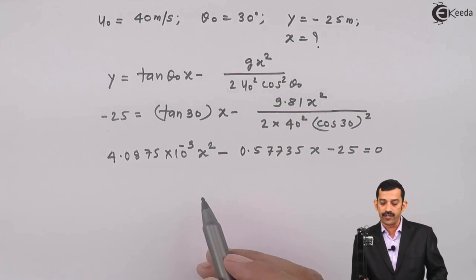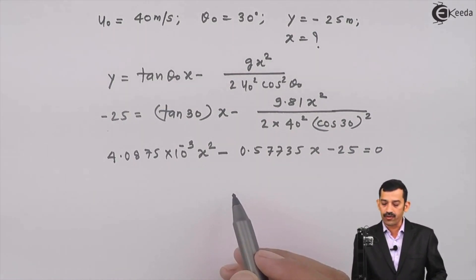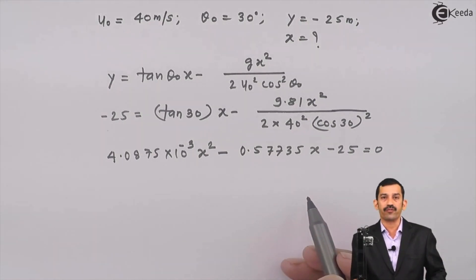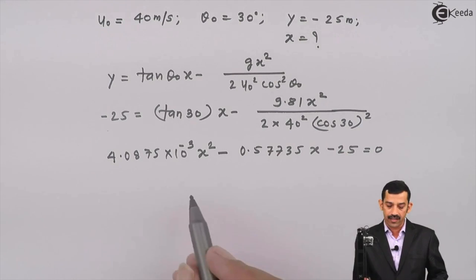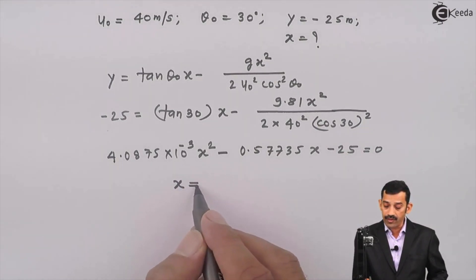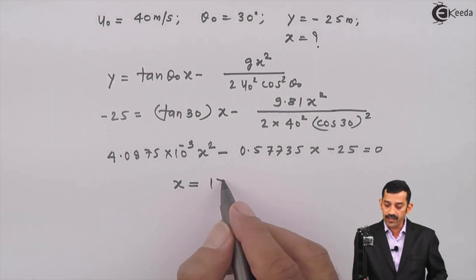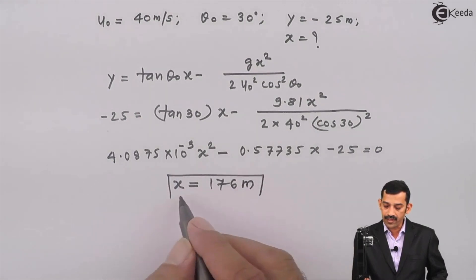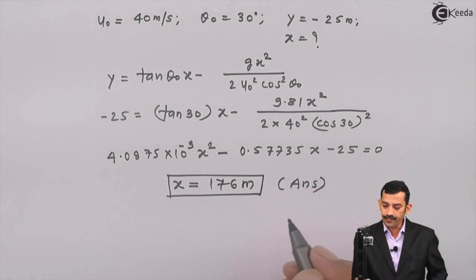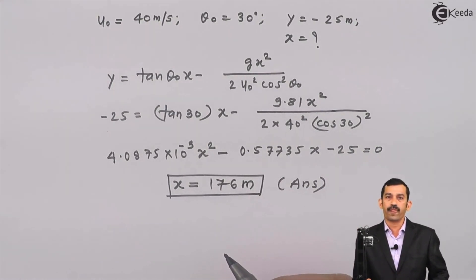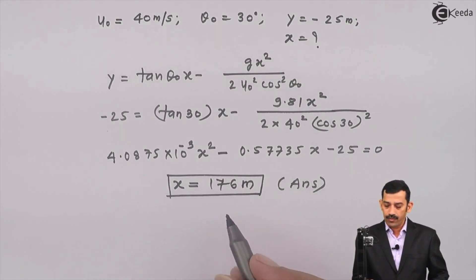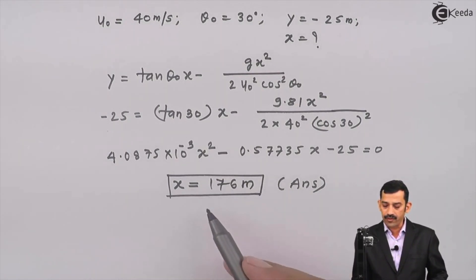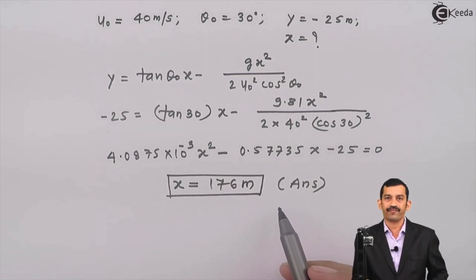The quadratic coefficients are: a = 4.0875×10⁻³, b = −0.57735, and c = −25. Solving using a calculator gives x = 176 meters. This is the final answer. Most projectile problems can be solved using the equation of path when data is given in terms of x, y, u₀, and θ₀ — three of the four terms are typically known.